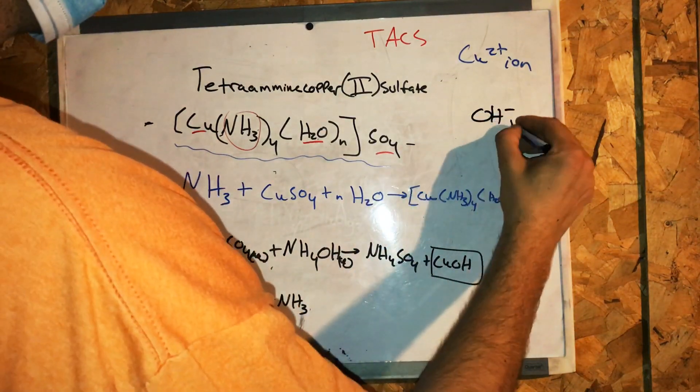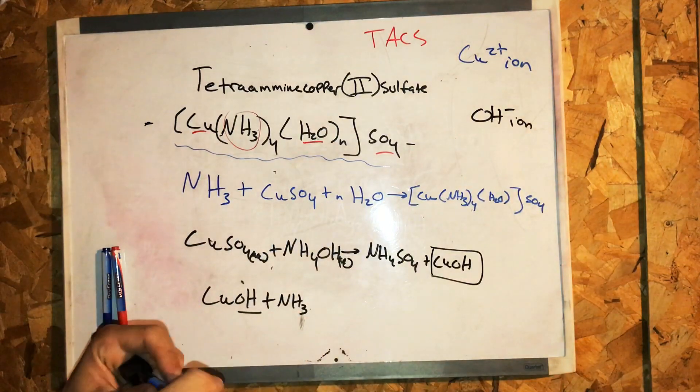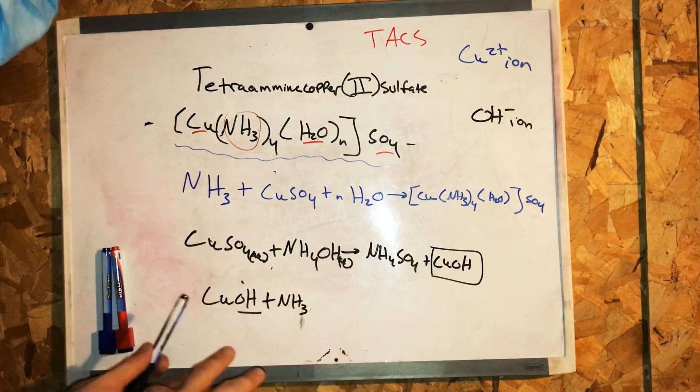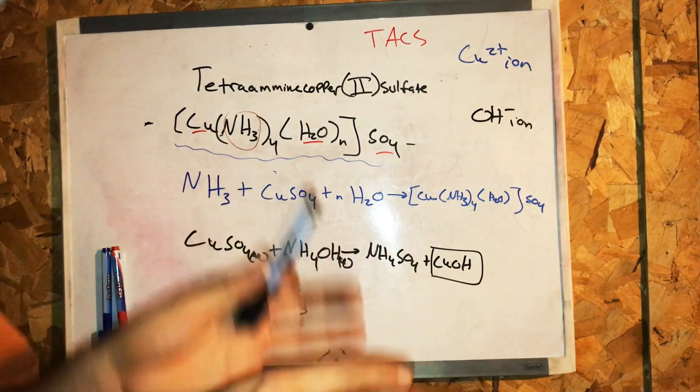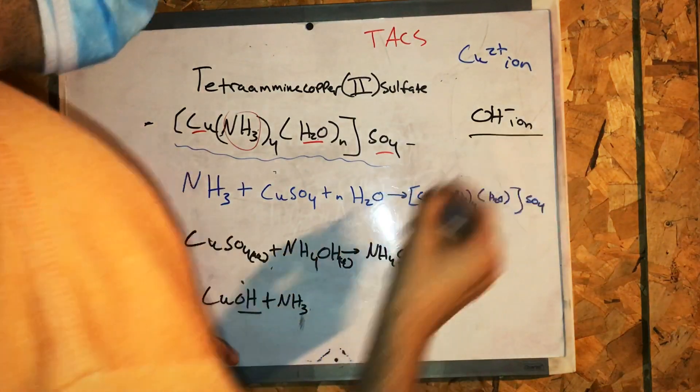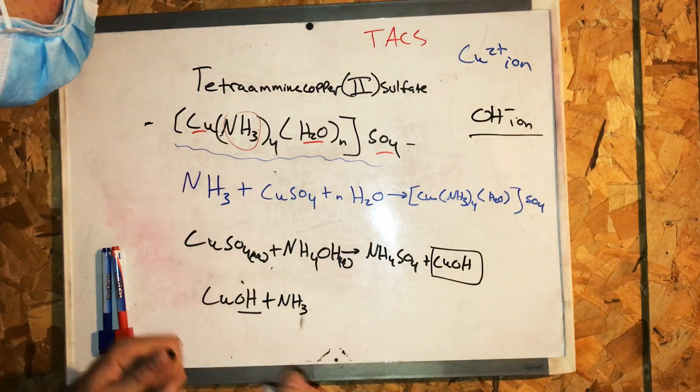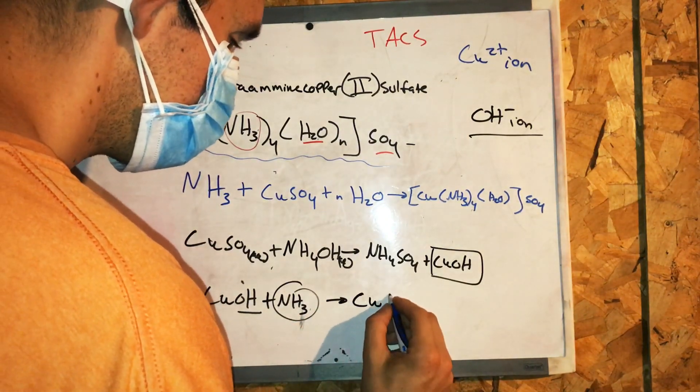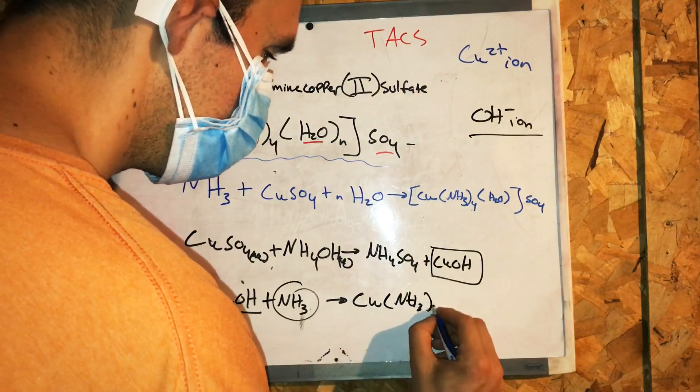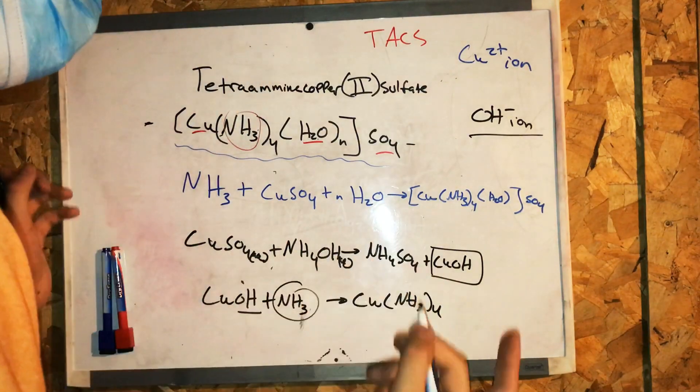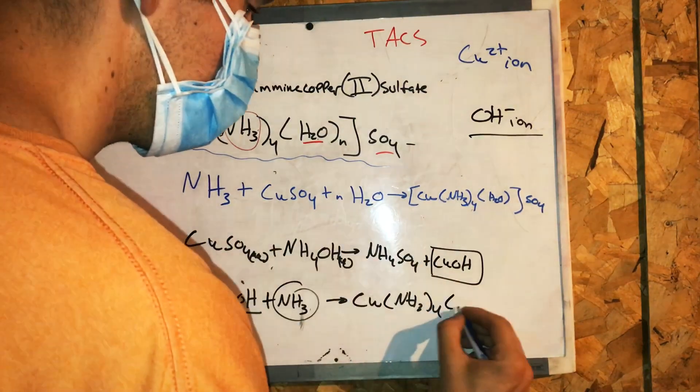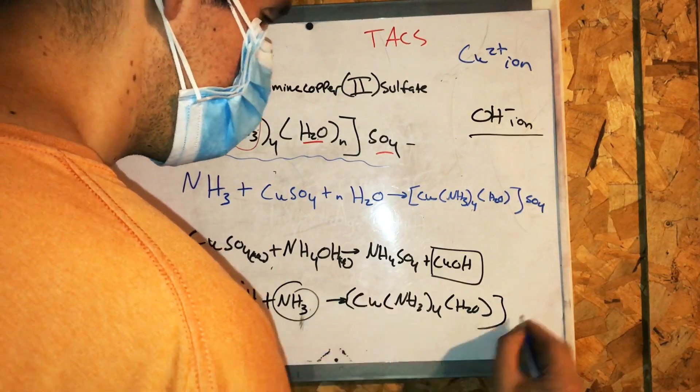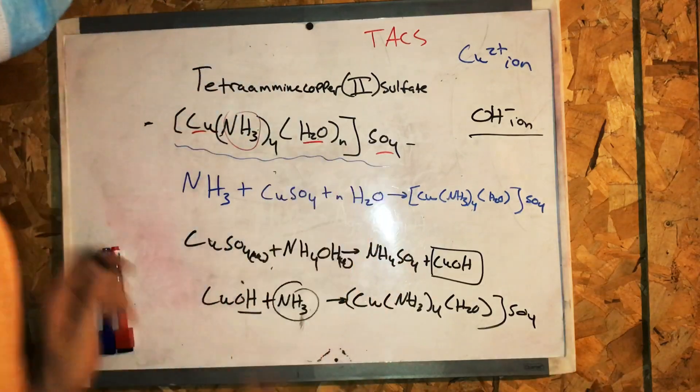So excess amounts of ammonia will kick away the hydroxide ion. And what's going to fall in place is the ammonia, and that's where we get the copper ammonia complex, and there's water mixed with it, so we write H2O here like that. And then, of course, this is all encased and connected to a sulfate.